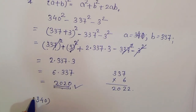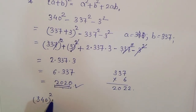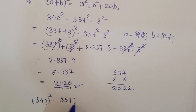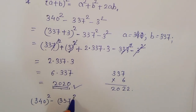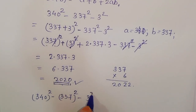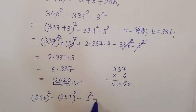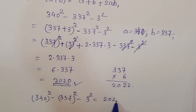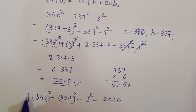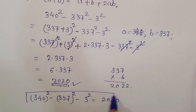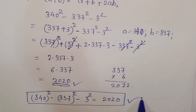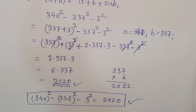So 340 square minus 337 square minus 3 square is equal to 2022. This is the solution. Thank you.